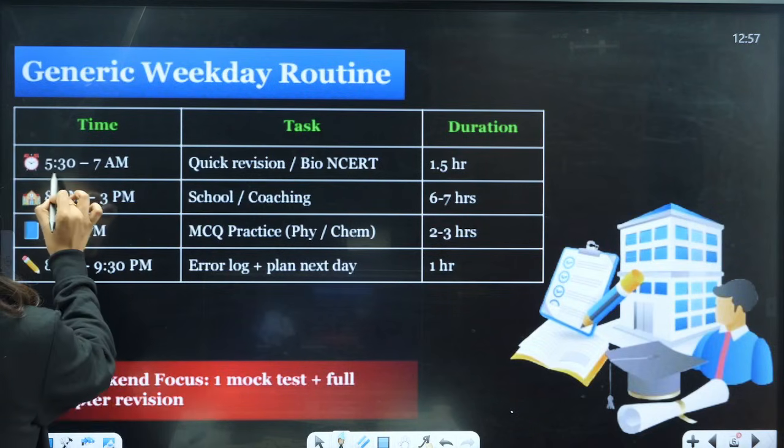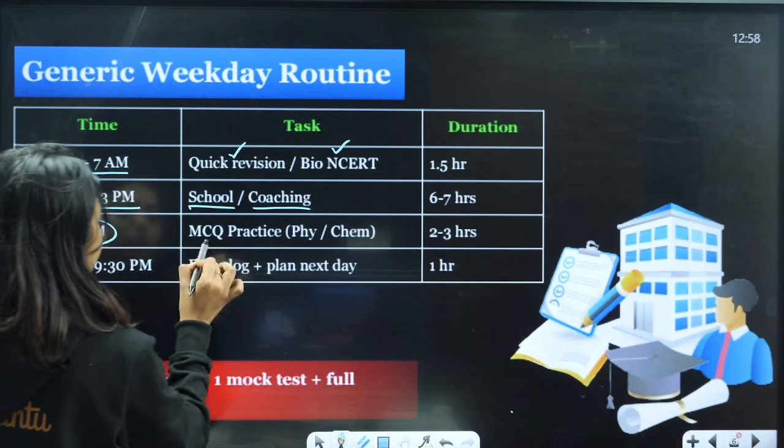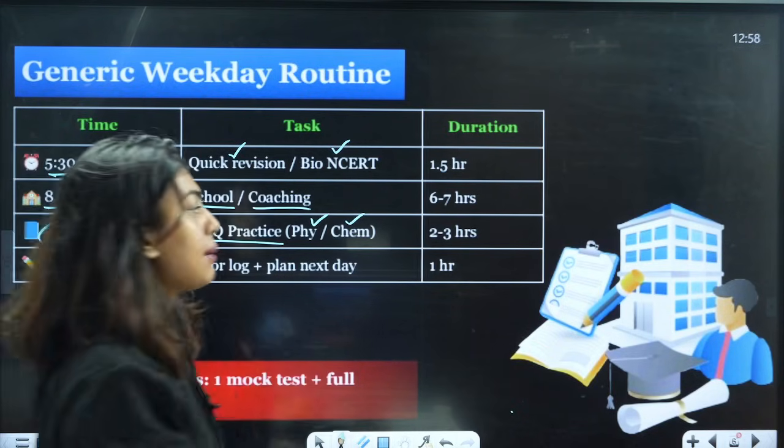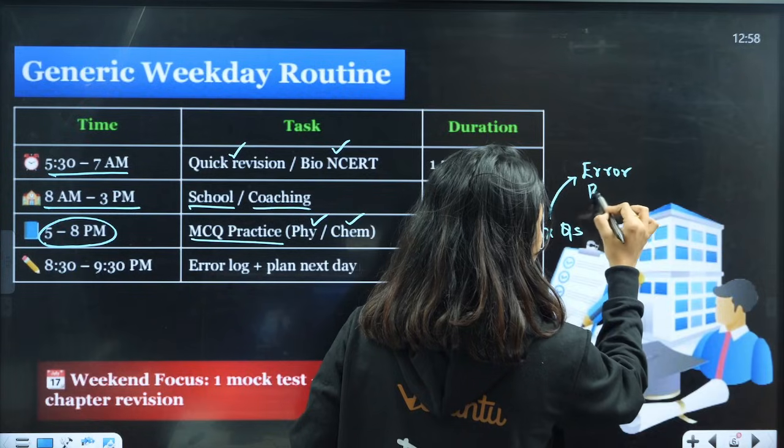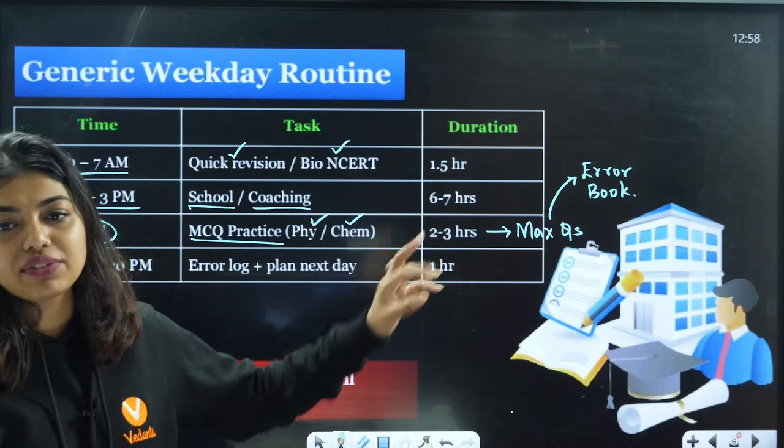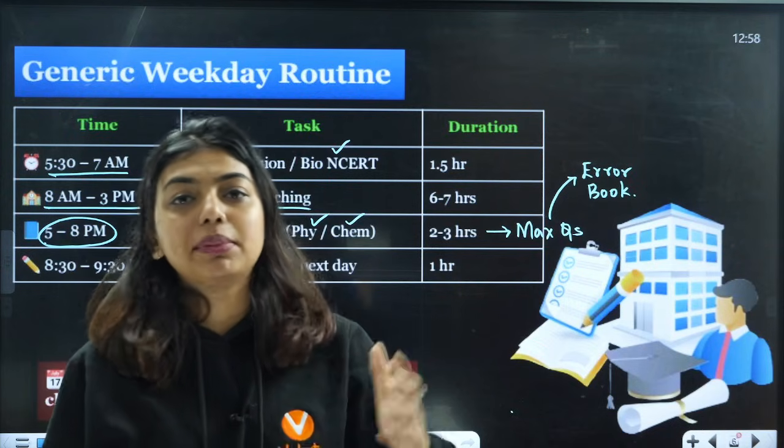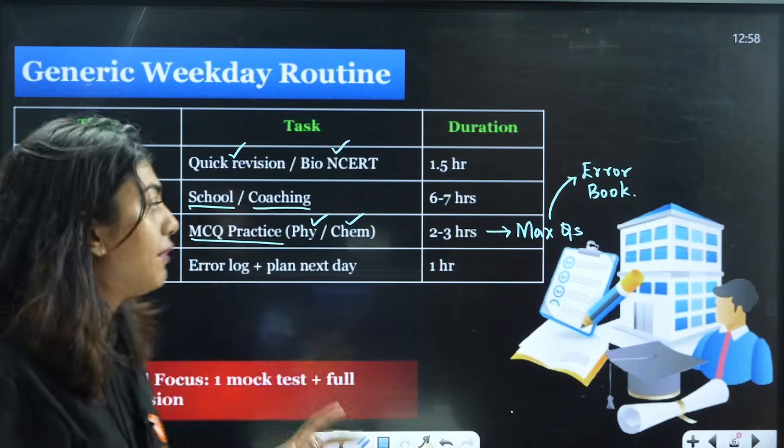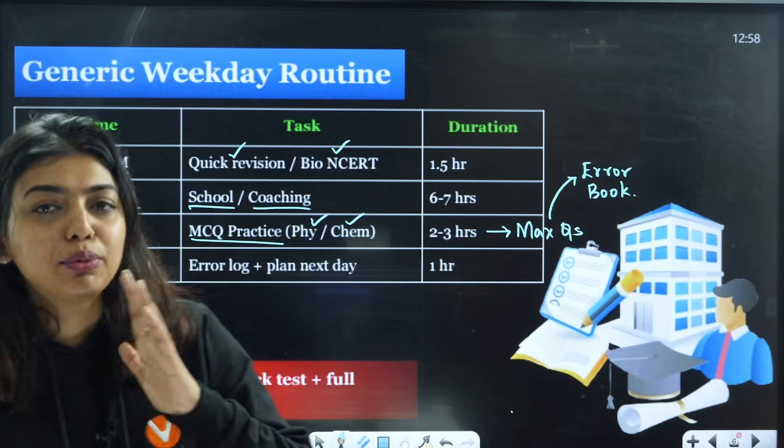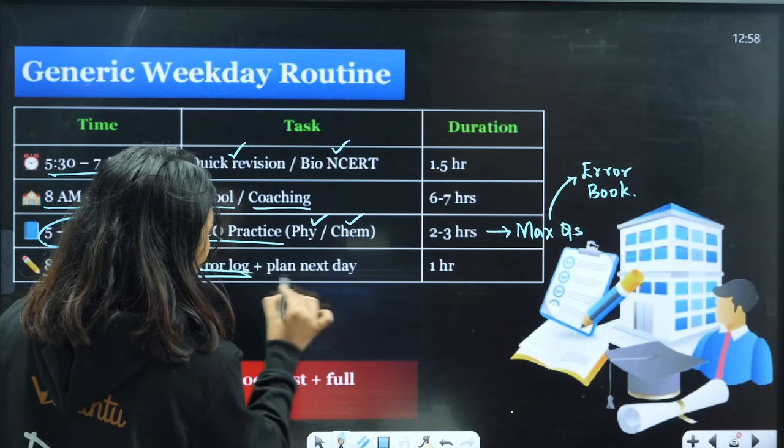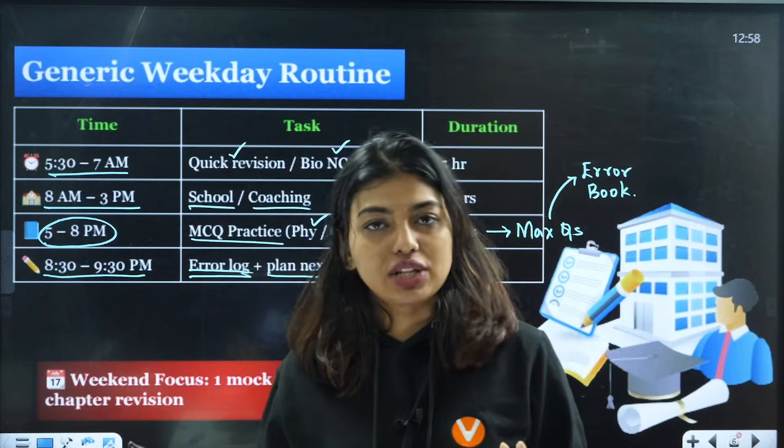Let's say you're a school-going class 12 student. See, 5:30 to 7 AM, students, you have to do quick revision and bio NCERT. 8 AM to 3 PM you're in school or coaching. 5 to 8 PM you have to do MCQ practice—physics and chemistry—two to three hours, and try to solve maximum questions and fill in your error book. You should fill in the error book this year the most. Because when conceptual errors decrease, it automatically gives us the motivation that yes, this student is going to crack NEET and maybe land in one of the top AIIMs. If you see in the error book that your conceptual errors are decreasing, that is a sign that you are improving. If it is increasing, that is a sign that you are deproving. 8:30 to 9:30 PM, error log and plan for the next day. Before bed, plan what you're going to do next day. This way you will be in a proper routine to solve the set of questions.